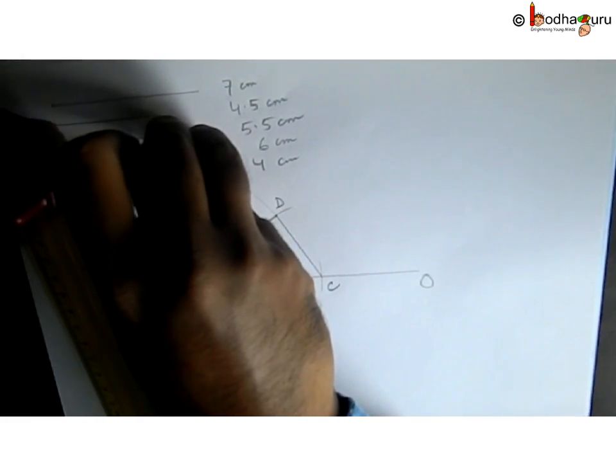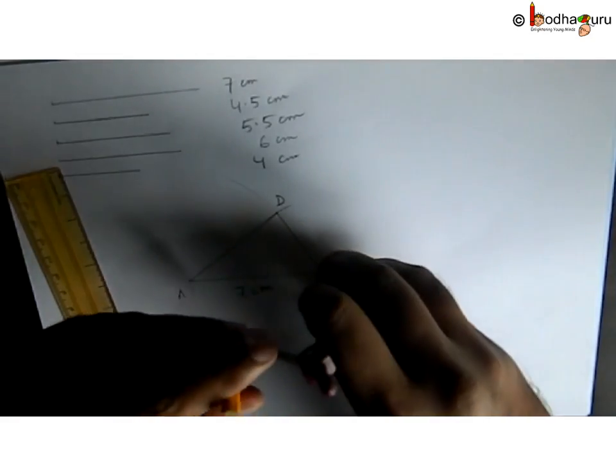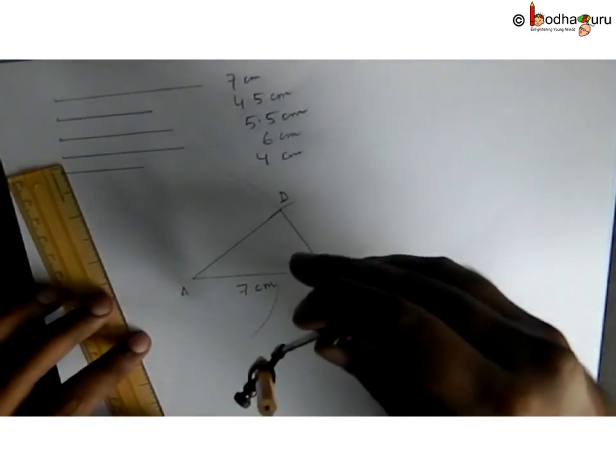We take that and we put a compass needle on C and we make an arc that crosses the previous arc.